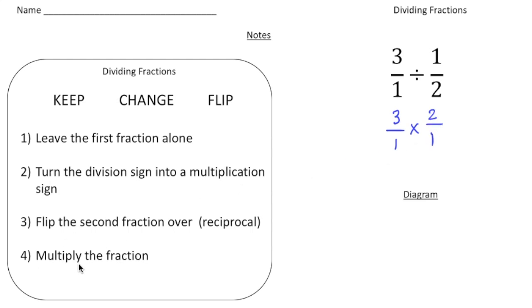And then finally multiply the fractions. Now at this point you can try to cross reduce if you can to save you some time. But this we can't. So to multiply fractions, remember you multiply the numerators and then the denominators. So 3 times 2 is going to be 6. And 1 times 1 equals 1. So our answer is 6. So there's 6 one-halves in 3.